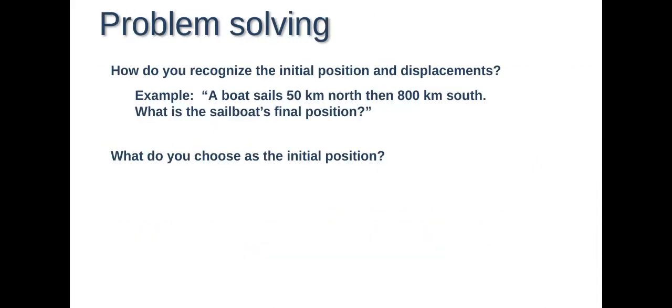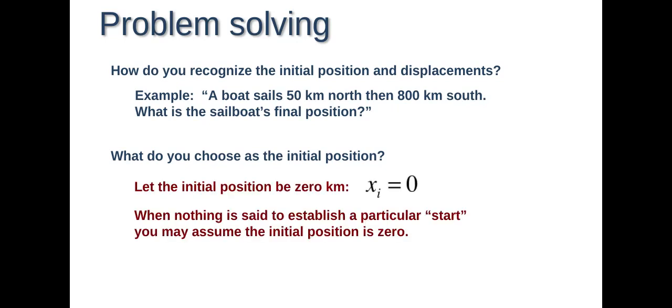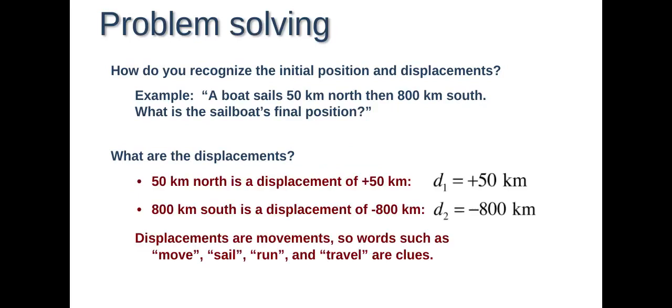So problem solving. How do you recognize the initial position and displacements? Here's our example. A boat sails 50 kilometers north than 800 kilometers south. What is the sailboat's final position? What do you choose as your initial position? The best choice is letting your initial position just be zero and it cuts back on extra math. So our XI will be zero. When nothing is said to establish a particular start, you may assume the initial position is zero. What are the displacements? We have two. We have a positive 50 kilometers and a negative 800 because 50 is going to the north, which has a positive value, while 800 is going to the south, which has a negative value.